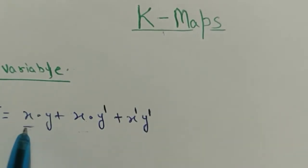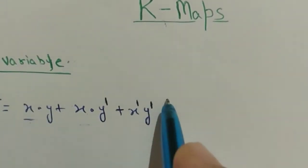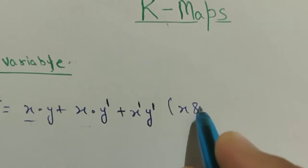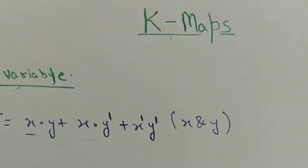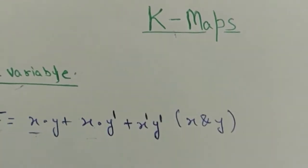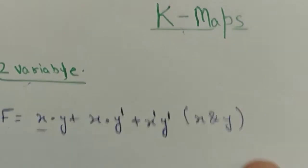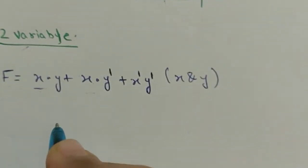As there are only two variables, x and y, in this function, therefore we will be using a two variable K-map. So how do you draw a two variable K-map?